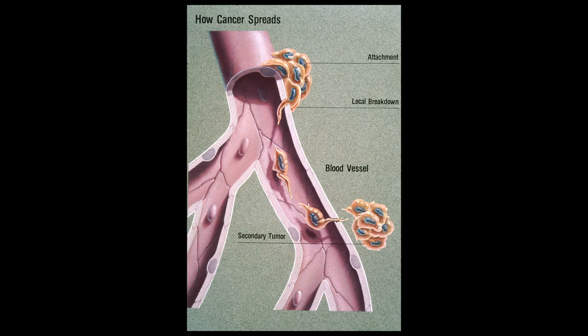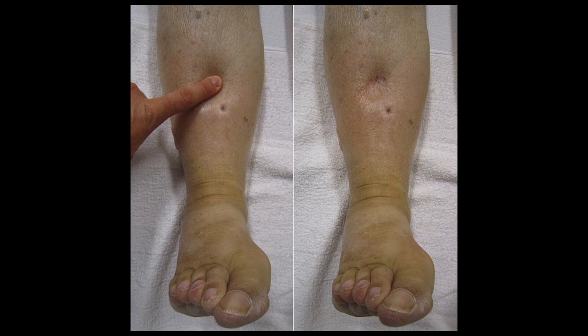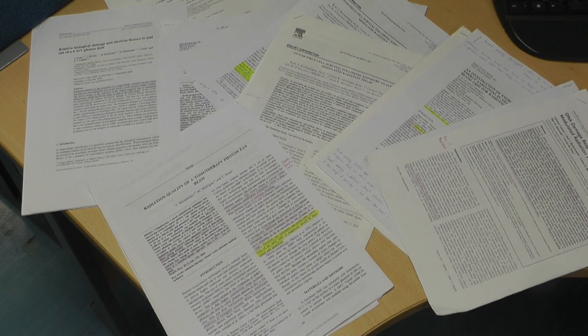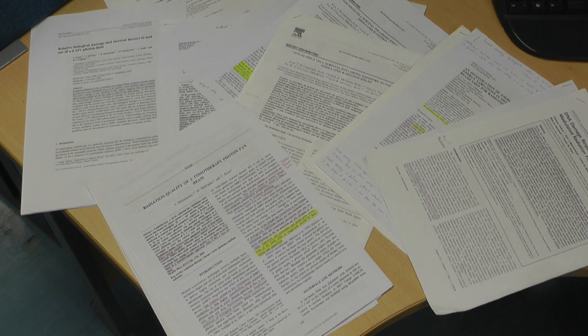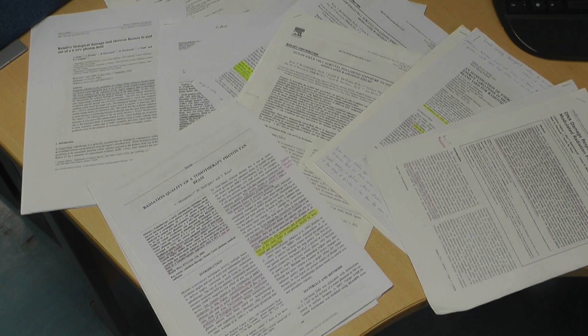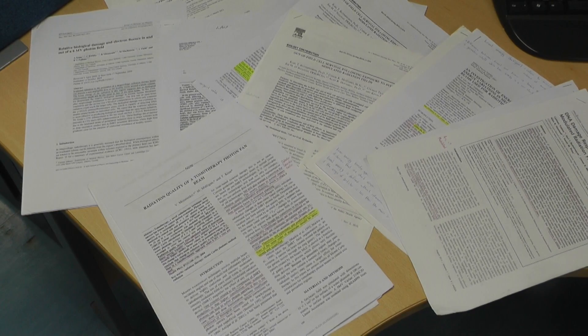It is important to minimise dose to normal tissue to prevent secondary cancers being induced in the patient and also to reduce any side effects. There have been a few publications recently highlighting the inaccuracies of the treatment planning system at calculating dose to normal tissue.